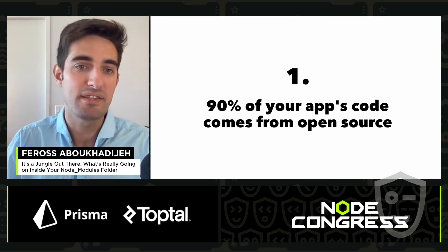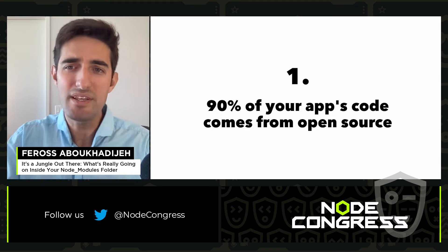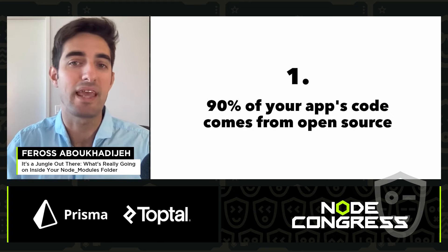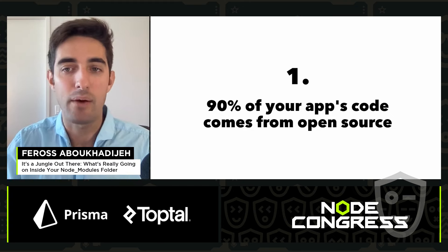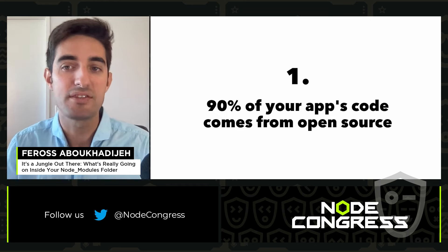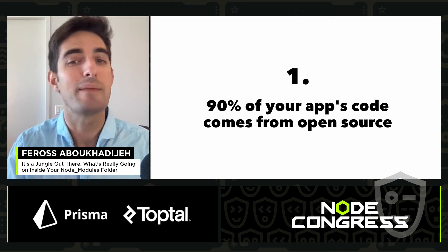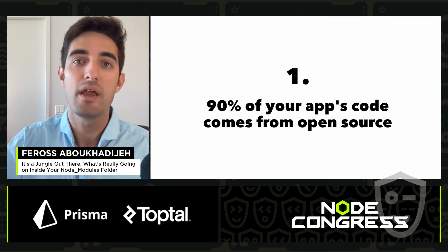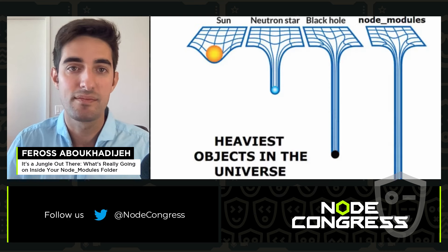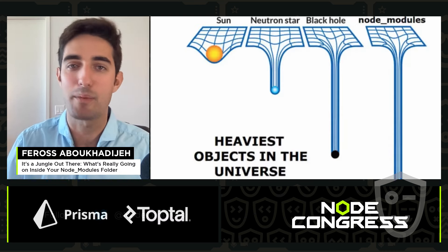The first reason is that 90% of your app's code comes from open source. We're really standing on the shoulders of giants. Open source is the reason we can get an app off the ground in hours and days instead of weeks or months, and it's why we don't need to be an expert in cryptography, time zones, or the virtual DOM to build a powerful modern web app. It's also the reason your node_modules folder is one of the heaviest objects in the universe.